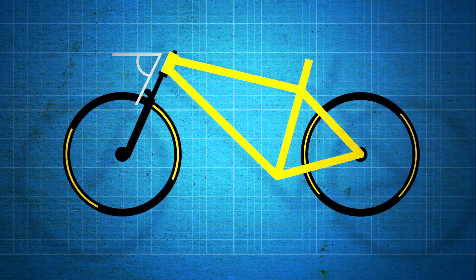Trail is altered by two things. The first is the head angle, which is the geometry number we're most familiar with. Put simply, the head angle is an imaginary line through the centre of the head tube to the ground, and this is measured from the horizontal.